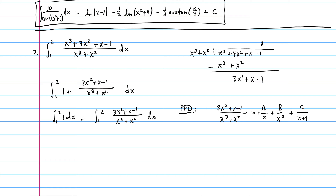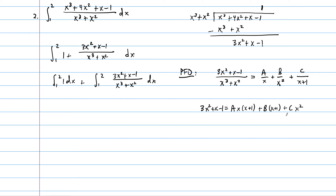Multiplying through, we get: 3x squared plus x minus 1 equals A·x(x plus 1) plus B·(x plus 1) plus C·x squared. Choosing x equals 0: the left side gives negative 1, and the right side leaves just B, so B equals negative 1.